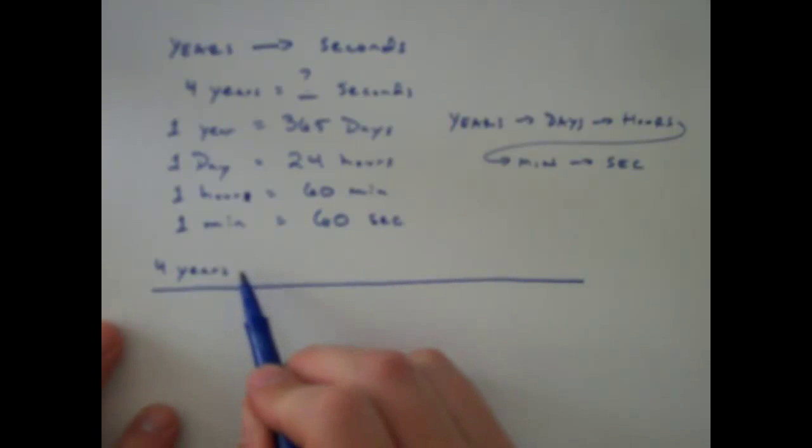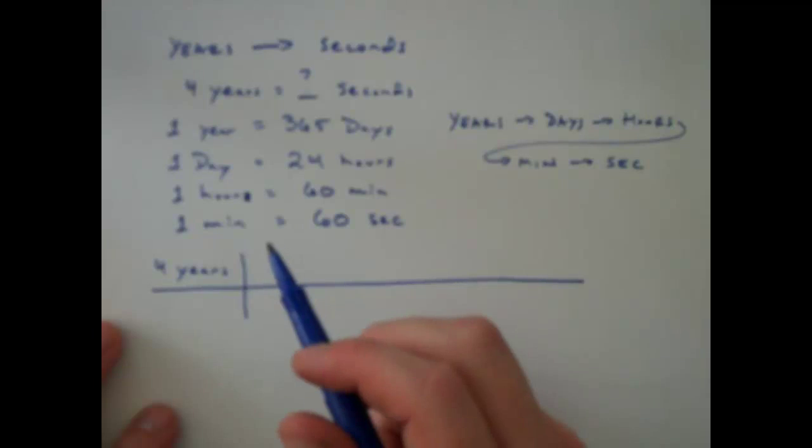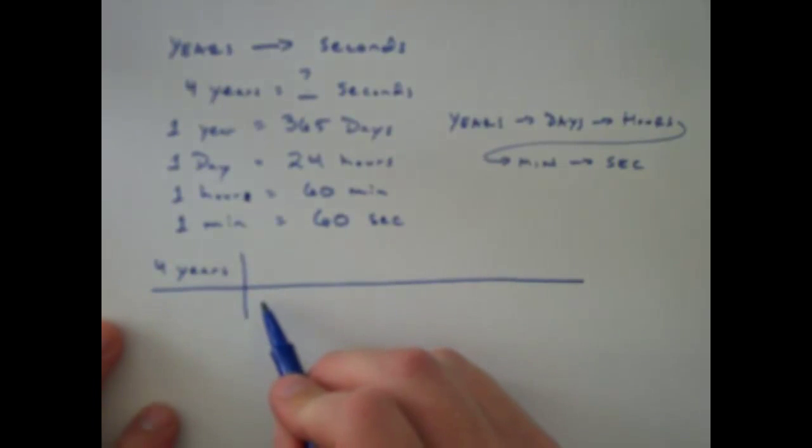This one's going to take a little bit of space here. So I'm going to start putting in my fence and in my conversions. So I've got years on top here. I'm going to get this year here and put it on the bottom. So I'll say one year here. And that equals 365 days.